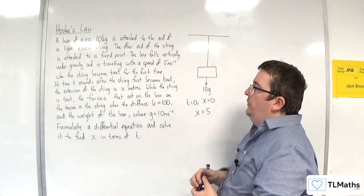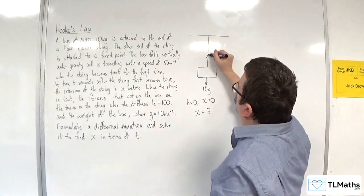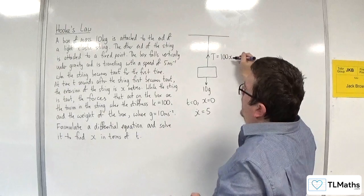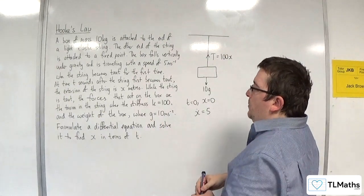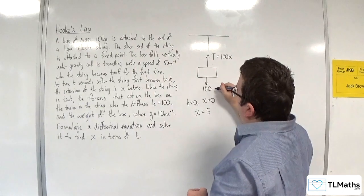While the string is taut, the forces that act on the box are the tension of the string, where the stiffness is k equals 100. So we've got the tension of the string, which is going to be 100 times x, and the weight of the box where g is equal to 10, so this is going to be 100 newtons.